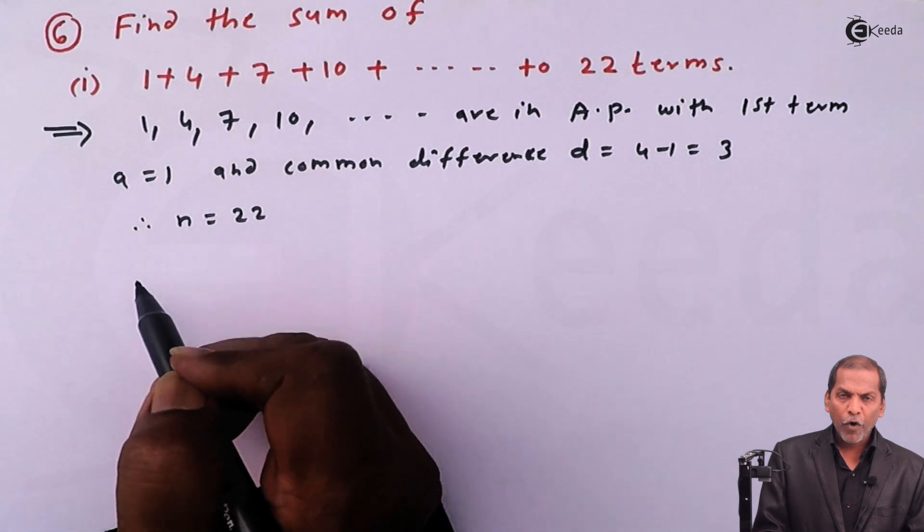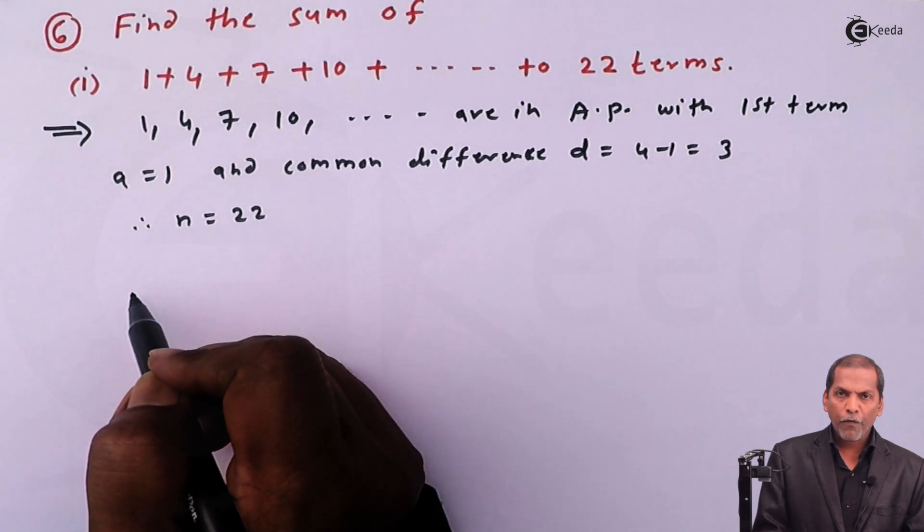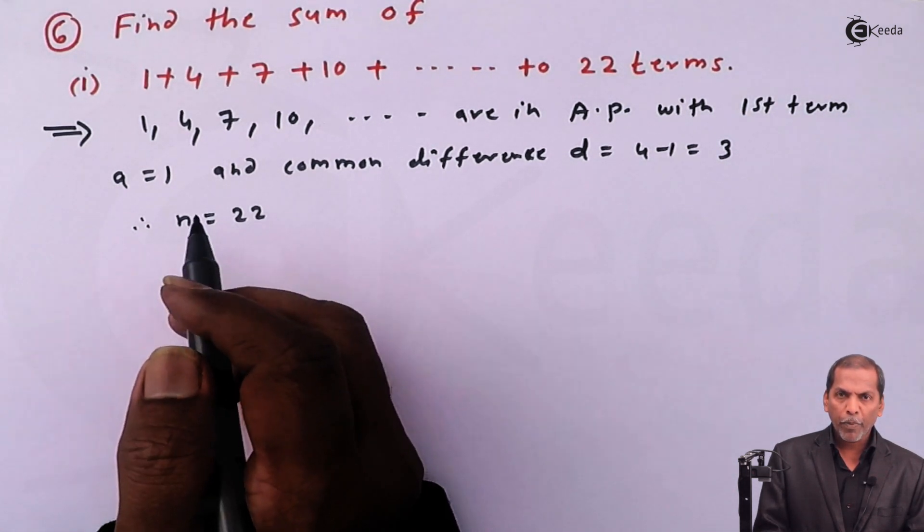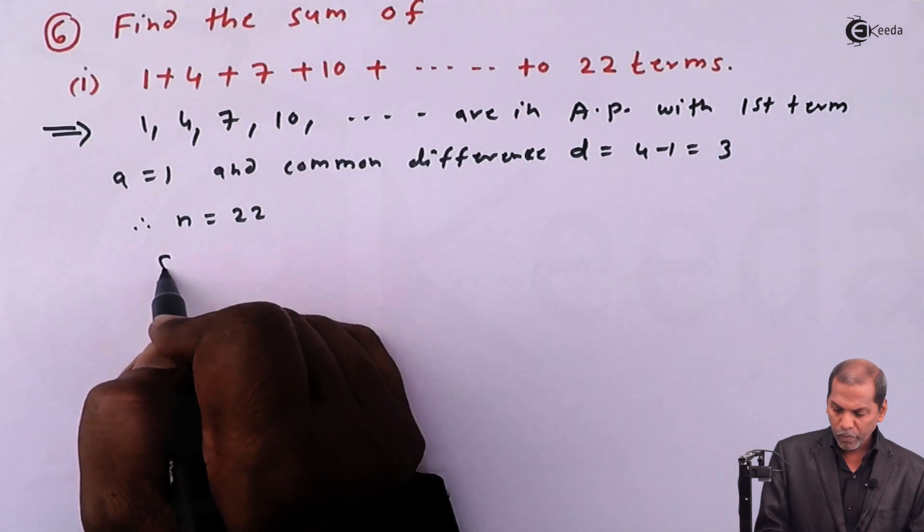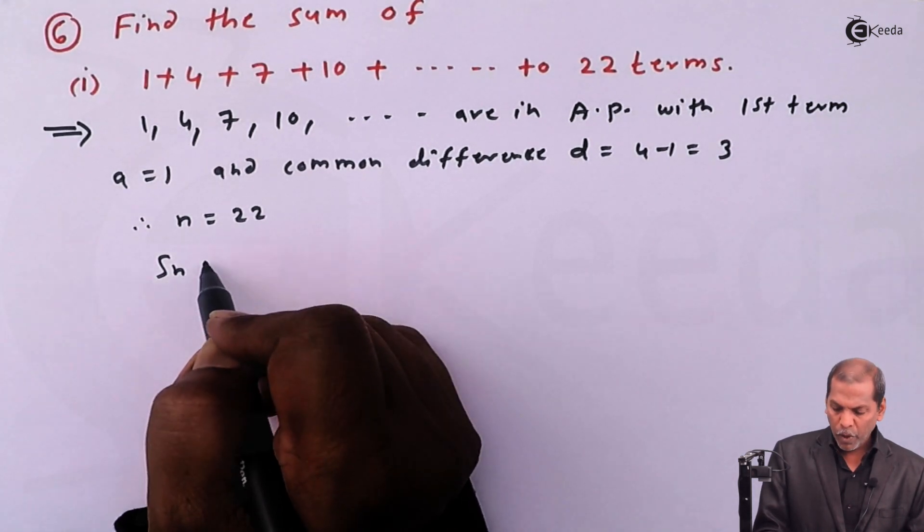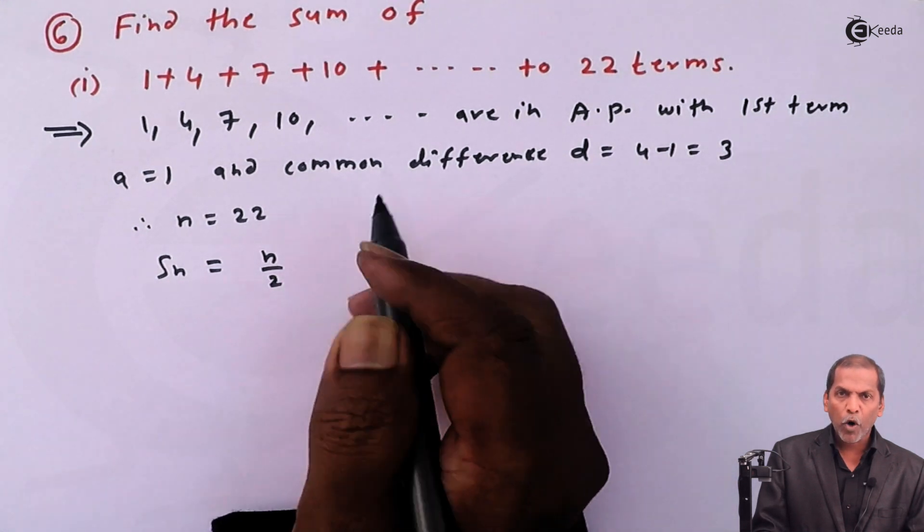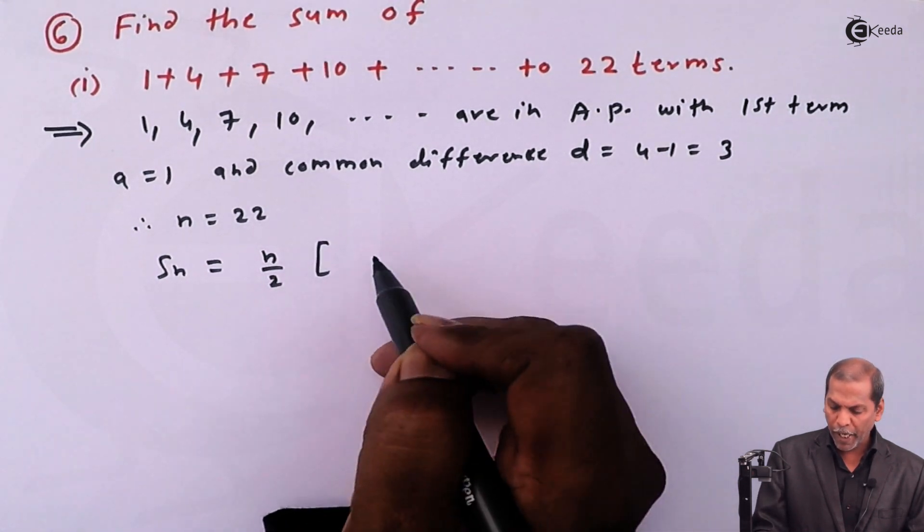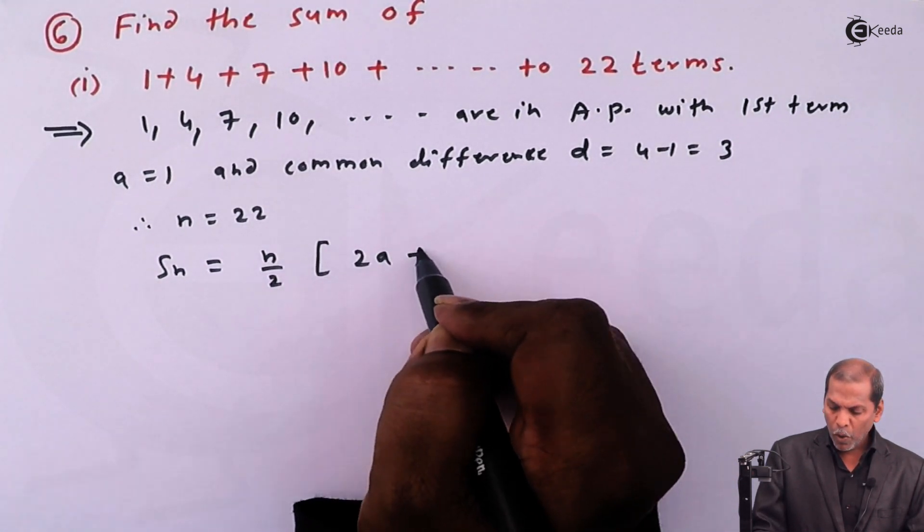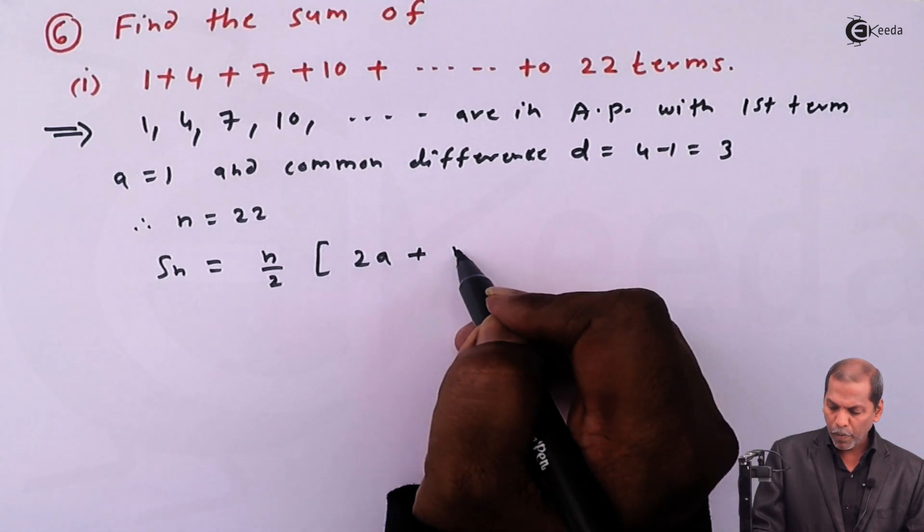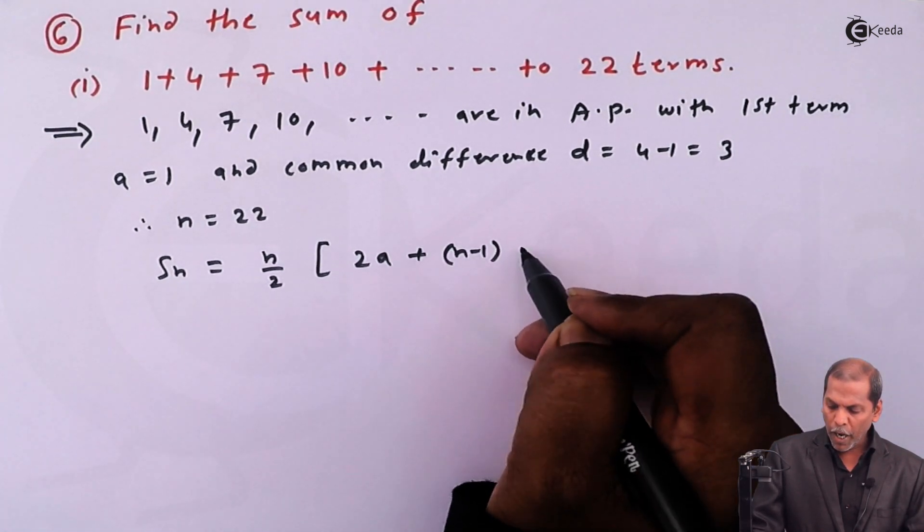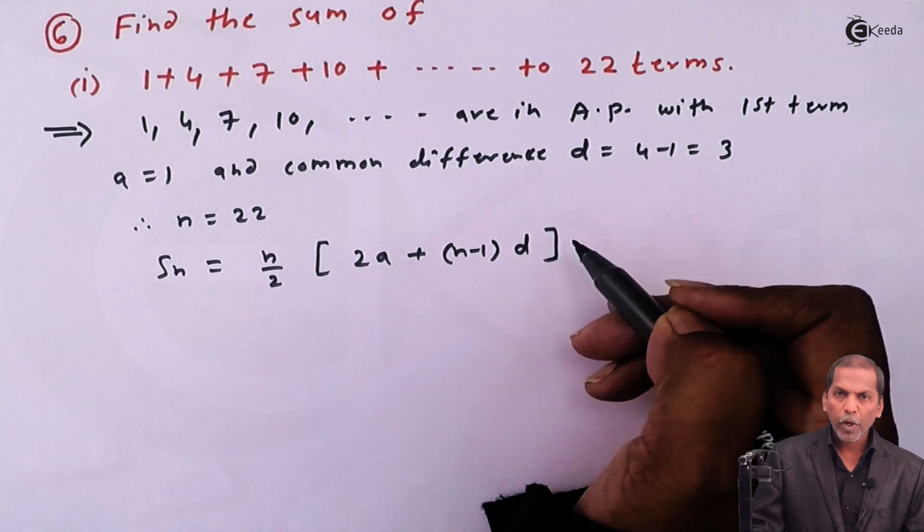Then we write the formula for the sum of first n terms of AP: S_n equals n upon 2 in bracket 2a plus n minus 1 into d.